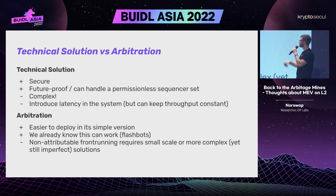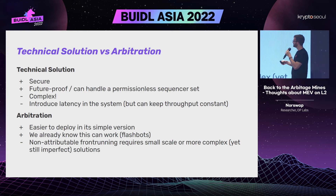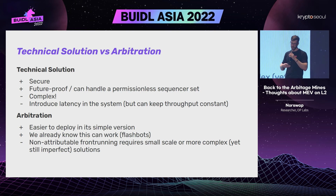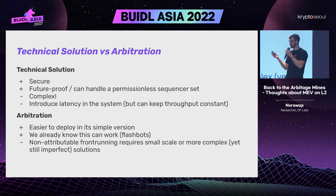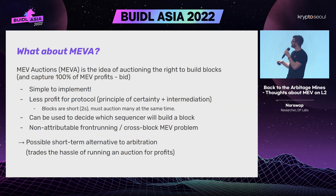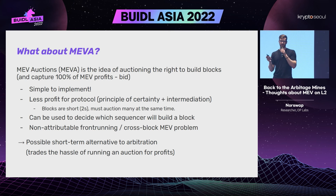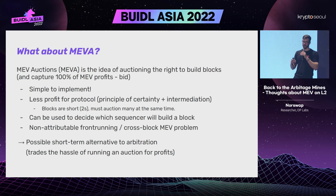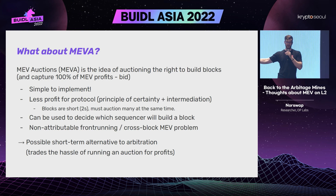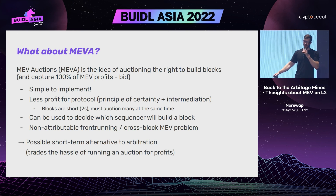To summarize: a technical solution using threshold encryption or similar can handle a very large sequencer set with no ambiguity about who cheated, but it's complex and introduces latency. Arbitration is much easier and we know it can work, but has the nasty issue of potential cheating. One thing Optimism has been pushing is MEV Auctions (MEVA): auctioning the rights to build blocks, so the block builder captures 100% of the MEV minus what they pay to searchers.